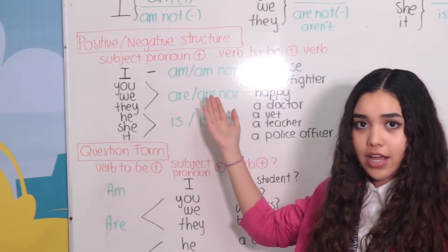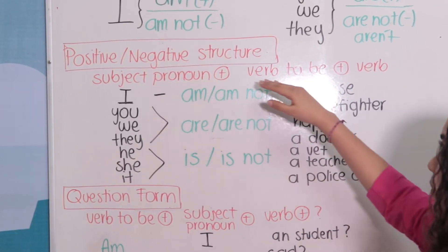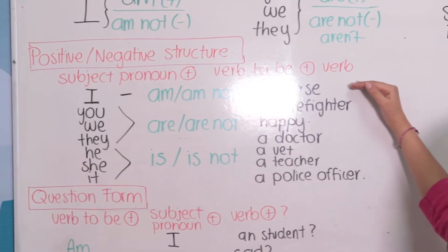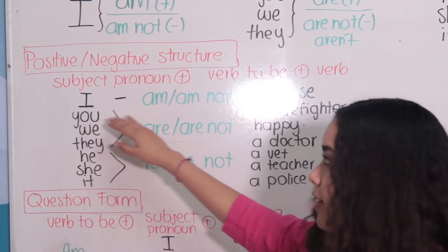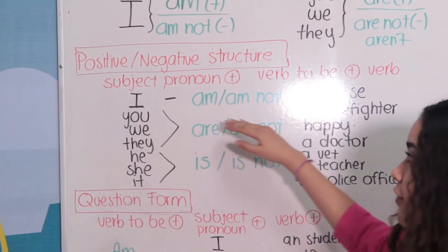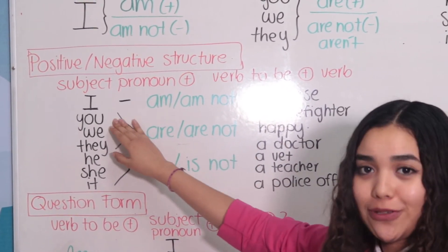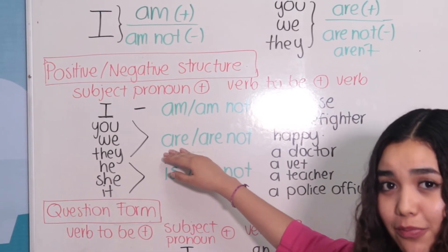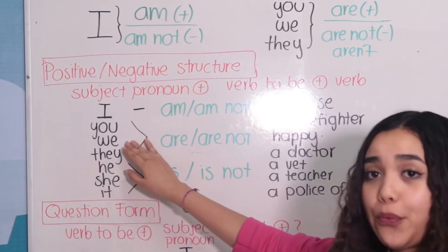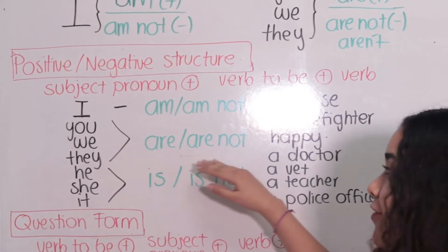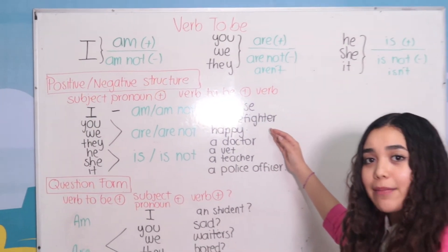Here we have the positive or negative structure. The structure is: pronoun plus the verb to be plus the verb. For example: 'I am' in positive or 'am not' in negative — a nurse. 'You are' in positive or 'are not' in negative — a firefighter. 'We are' or 'are not' — happy. Here we are talking about an emotion.